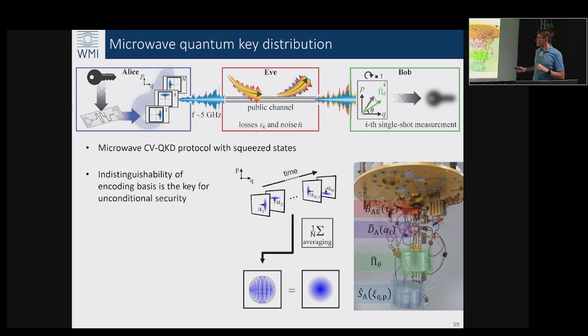You overlap those randomly squeezed states which are randomly squeezed according to a Gaussian distribution, so effectively it means that you don't provide the knowledge of your encoding basis to Eve. This is the source of indistinguishability of the CVQKD protocol which is the key for unconditional security. Other than that we used the same devices as we used for quantum teleportation, so these were our universal building blocks.